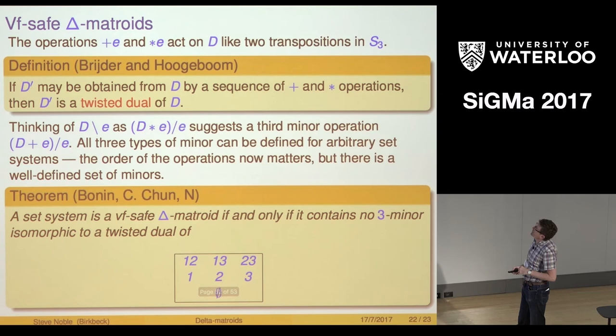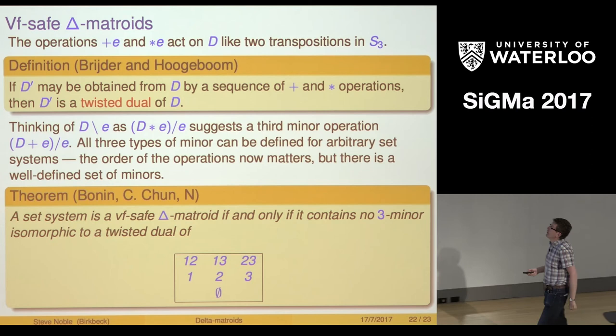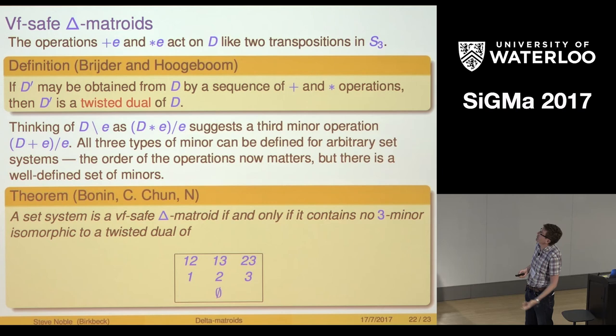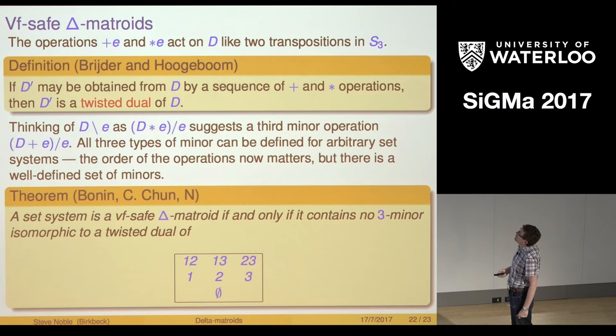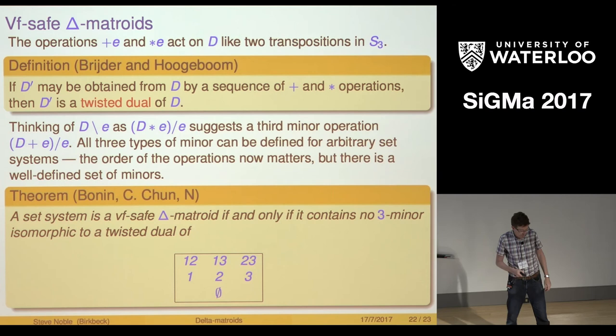Very recently what we've shown is that although we can't really say very much at the moment about what the excluded minors are for VF-safe delta matroids, if we want a set system to be a VF-safe delta matroid, then it is if and only if it contains no three minor isomorphic to a twisted dual of this one excluded minor.